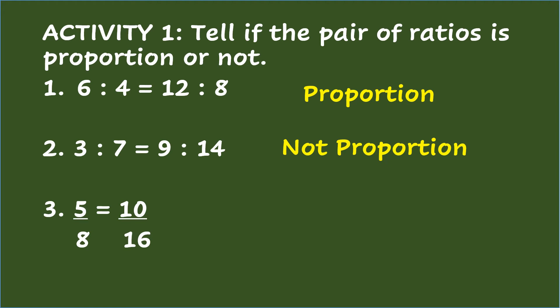Number 3: 5 over 8 equals 10 over 16. Cross-multiplying: 5 times 16 equals 80, and 10 times 8 equals 80. Therefore, the ratios are proportion, since the products are both 80.